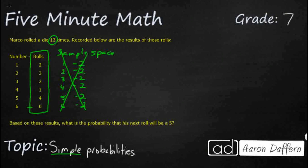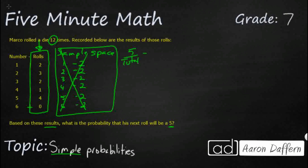It's the same thing like if you're flipping a coin 10 times, you should get 5 heads and 5 tails, but sometimes it doesn't work out like that. So let's look at the probability that his next roll will be a 5, and we're going to use this experimental data because it says right here, based on these results — we're not going to look at our sample space of theoretically getting two 5s out of 12 rolls. We're going to look at our chances of a 5 over our total. He got four 5s and he had 12 rolls, so our probability is 4 out of 12 based on these results.